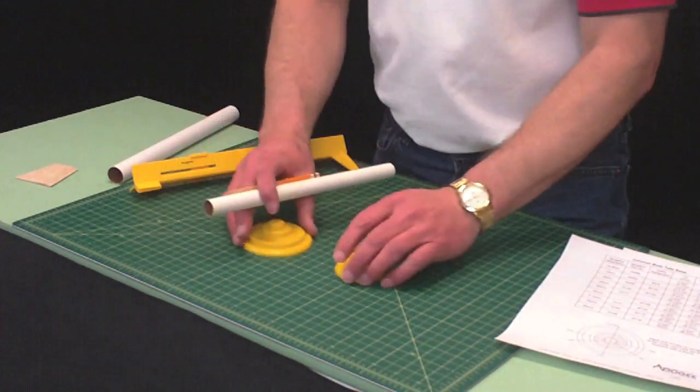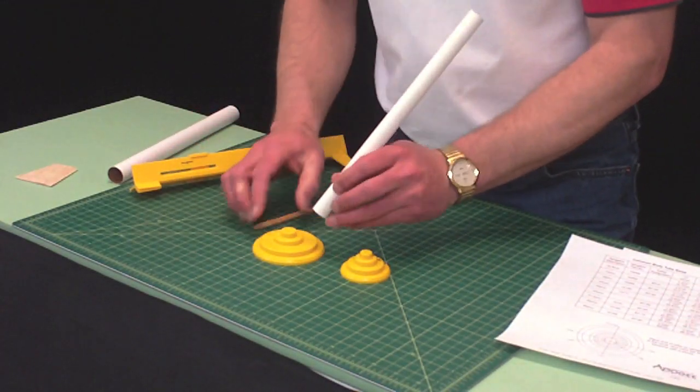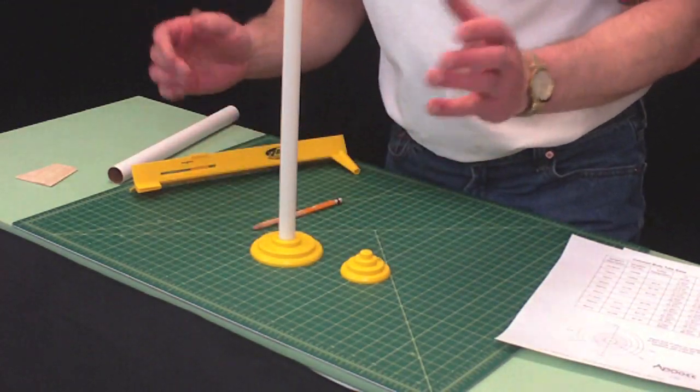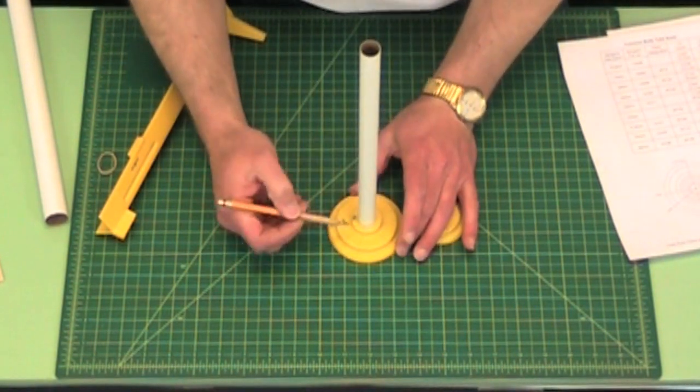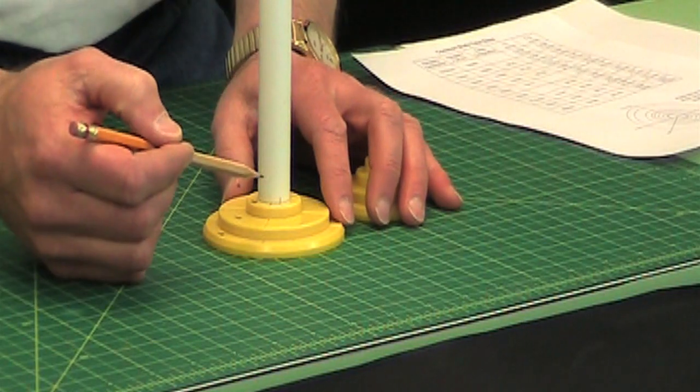These things are a lot easier to use because basically you just slide it on and it holds it for you, and then you just align it to the right number of fins and you can mark either three or four fins with these.